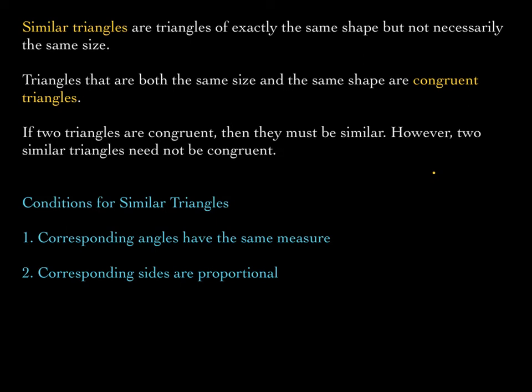Two triangles are called similar if two conditions are met: number one, corresponding angles have the same measure; and number two, corresponding sides are proportional, meaning the ratios of their corresponding sides are equal. Both conditions must be met. Remember, similar triangles do not necessarily mean the same size, but they do mean the same shape.